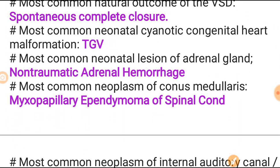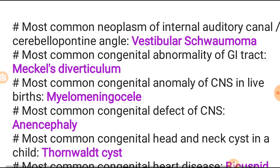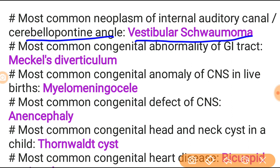Most common neonatal lesion of the adrenal gland is non-traumatic adrenal hemorrhage. Most common neoplasm of the conus medullaris is myxopapillary ependymoma of the spinal cord. Most common neoplasm of the internal auditory canal or cerebellopontine angle is vestibular schwannoma. Most common congenital abnormality of the GI tract is Meckel's diverticulum - asked many times in PG exams.